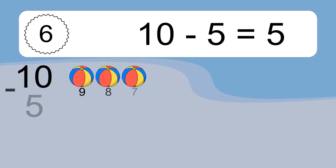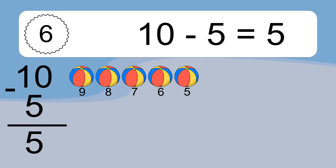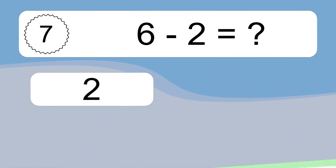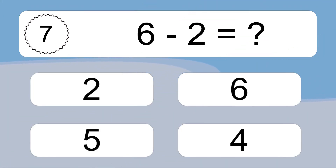Ten minus five equals what? Ten minus five equals five. Let's count it: 9, 8, 7, 6, 5.